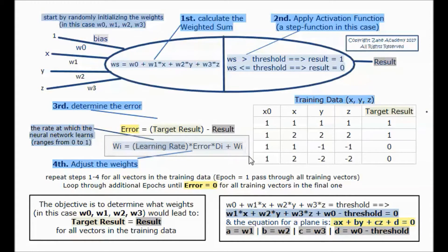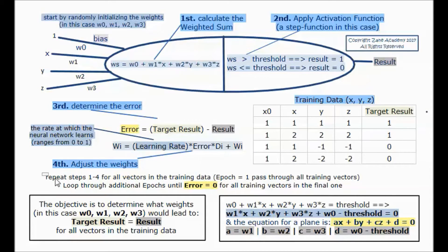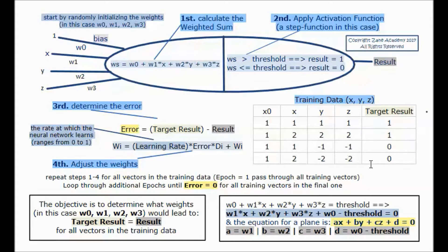Fourth, we adjust the weights: w1 equals the learning rate times the error times x plus the original w1, and w2 equals the learning rate times the error times y plus the original w2, and same for w3. The learning rate ranges from 0 to 1. We repeat steps 1 through 4 for all vectors in the training data — this is one epoch — and then loop through additional epochs until the error equals 0 for all training vectors.